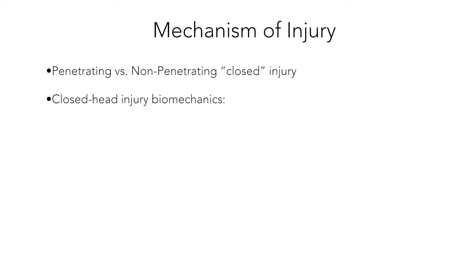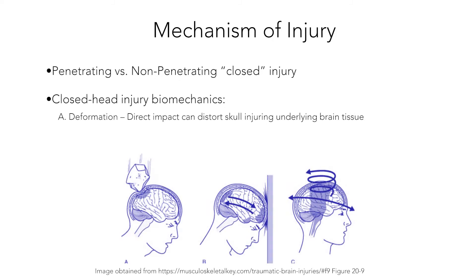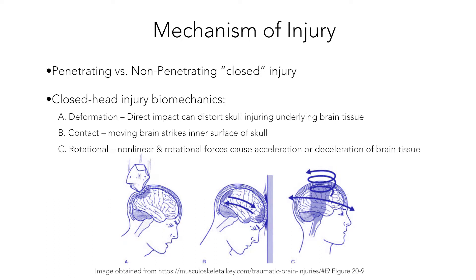This type of brain injury carries an increased risk of secondary infection due to the direct contact with the brain tissue and potential exposure of that brain tissue. A closed head injury, on the other hand, can be the result of several different biomechanics. The first, pictured here, is through deformation — the result of a direct impact that distorts the skull, injuring the underlying brain tissue. Pictured next is a demonstration of injury through direct contact, where the brain can be jarred and move within the skull, striking the inner surface. And finally, through rotational forces and non-linear forces, acceleration and deceleration of brain tissue can occur.